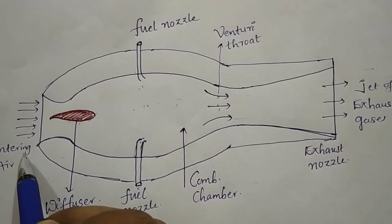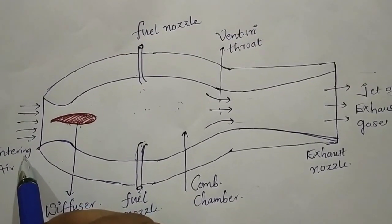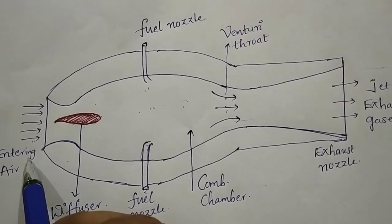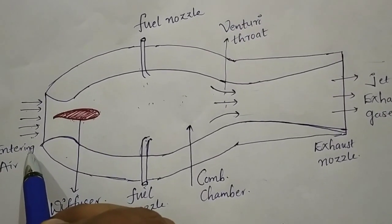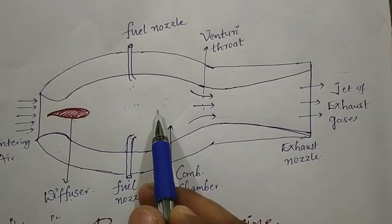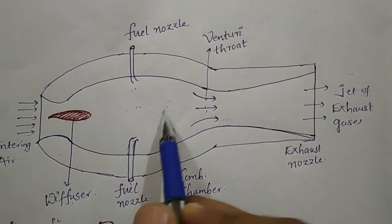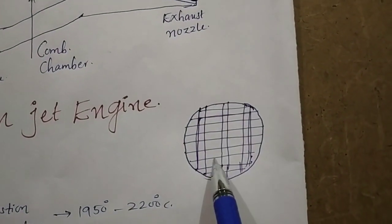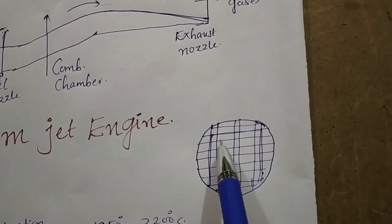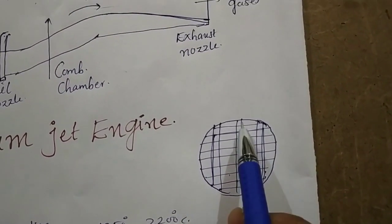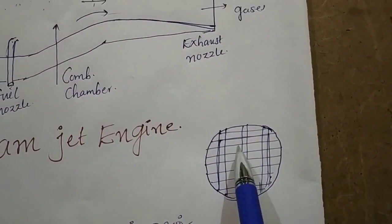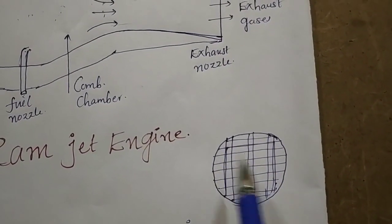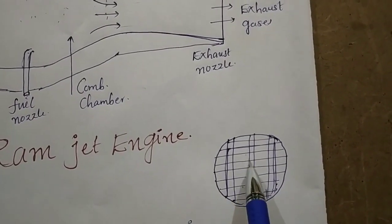One new device is kept at the inlet, called a grid. The grid is like shutter walls, and these walls open and close depending on the condition. Some pressure is developed in the combustion chamber, and we keep one grid there. The grid consists of walls that automatically open and close based on the pressure difference between one side and the other side.